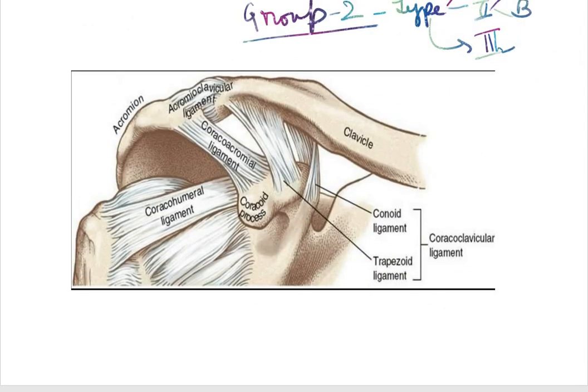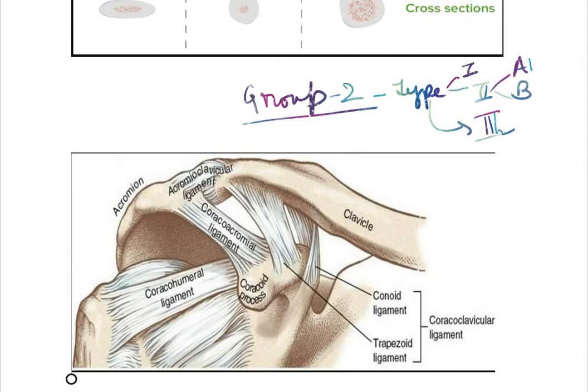It is further divided into three subtypes. Type 1, type 2a, b and type 3. Type 1 is when the fracture line is interligamentous, between the conoid and the trapezoid ligament. It is undisplaced fracture.